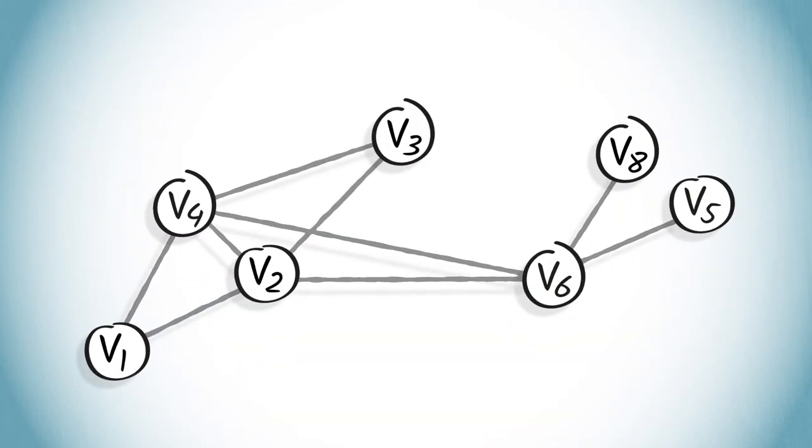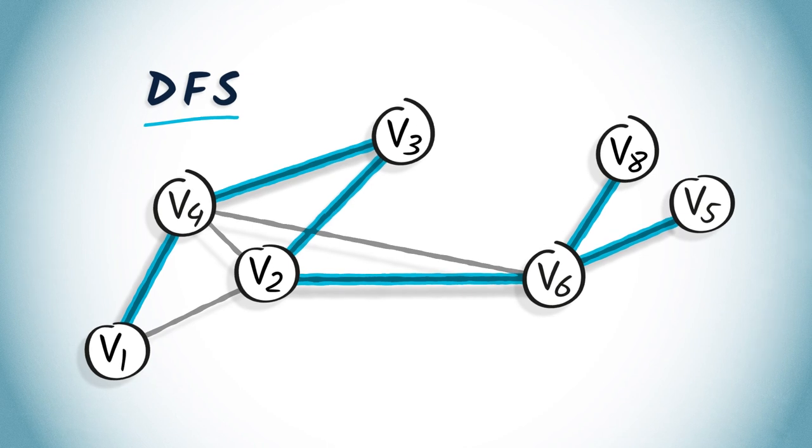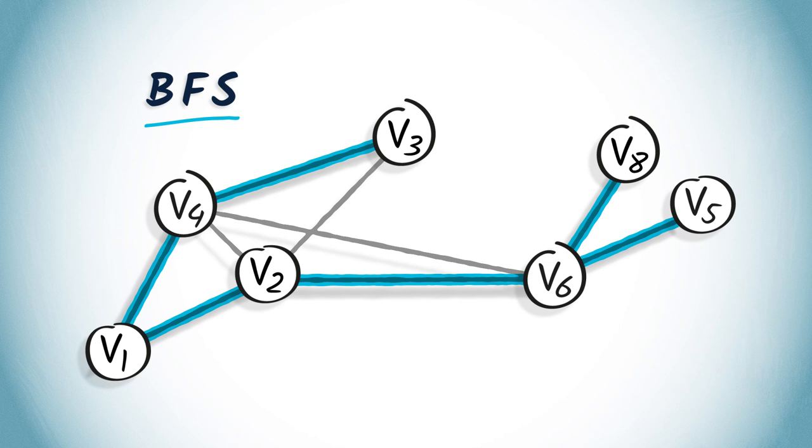In the previous example, the spanning trees obtained by a BFS and a DFS are very different. Here is another example using the graph we've considered earlier in this lesson. This is a spanning tree obtained from a DFS starting from V1, while this is a spanning tree obtained from a BFS starting from V1.